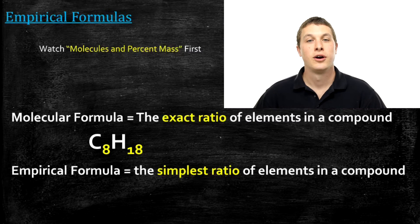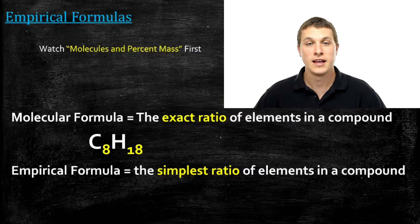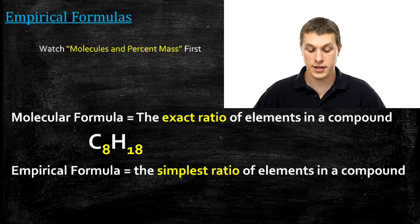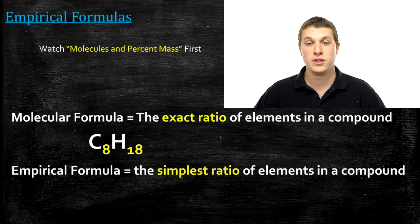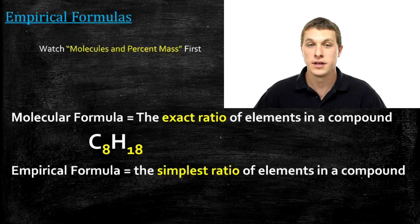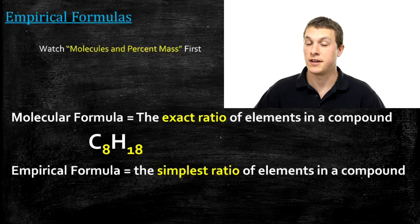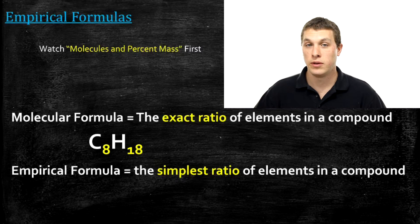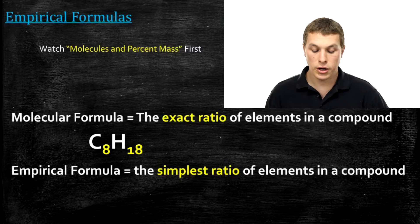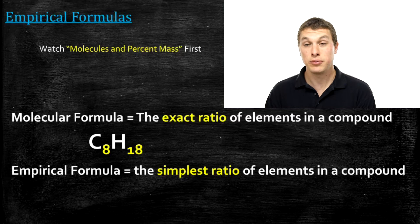In this episode of Real Chemistry, we're going to talk about a new type of chemical formula called the empirical formula. What you're normally used to hearing is called a molecular formula, and that just tells you the exact number of atoms in a molecule. For example, if your molecular formula is C8H18, that's telling you there are eight carbons and 18 hydrogens in that molecule.